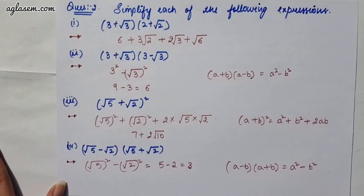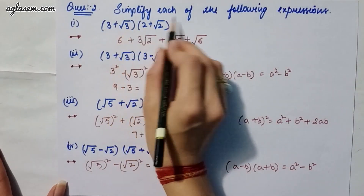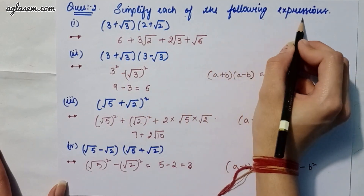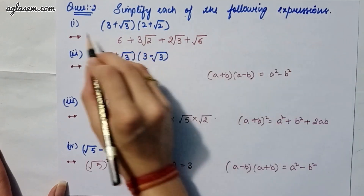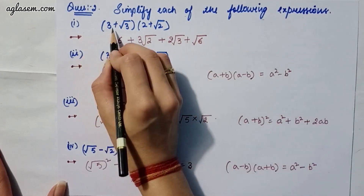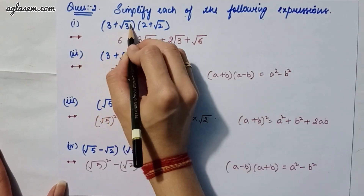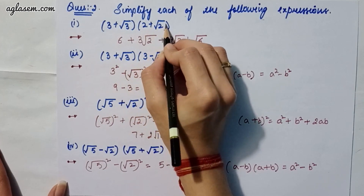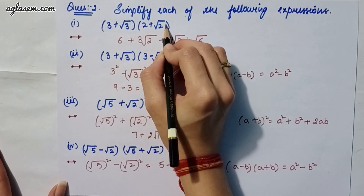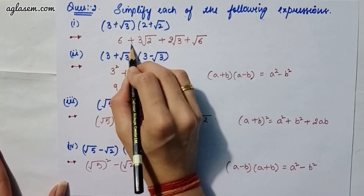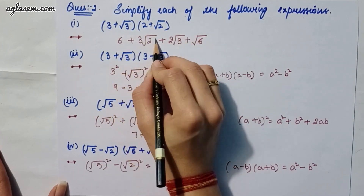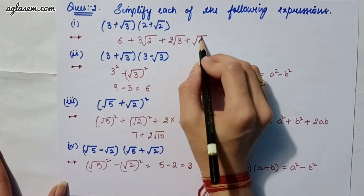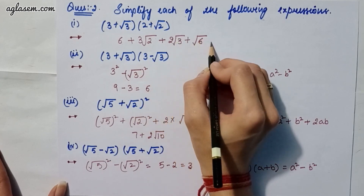Moving to our second question, which says: simplify each of the following expressions. Part 1 says (3 plus root 3) and (2 plus root 2). The answer is 6 plus 3 root 2 plus 2 root 3 plus root 6.